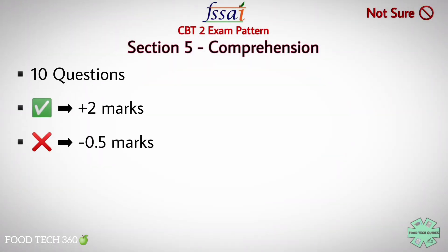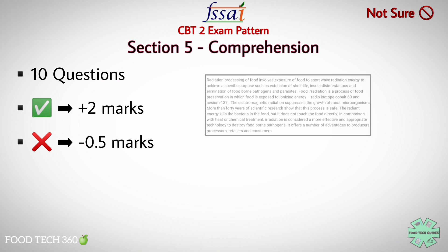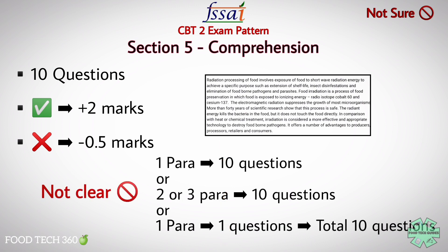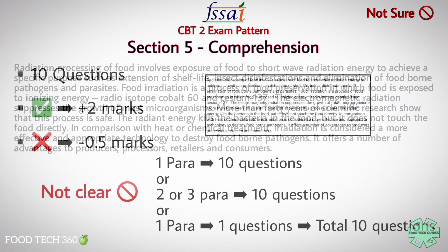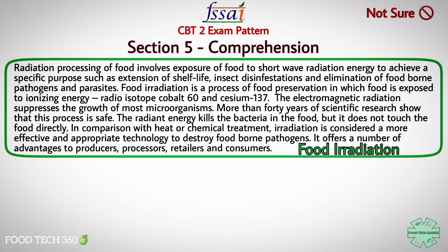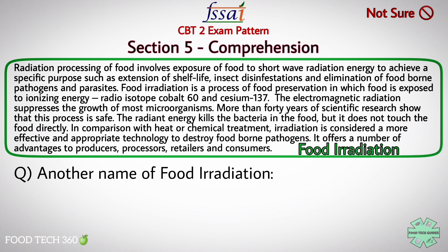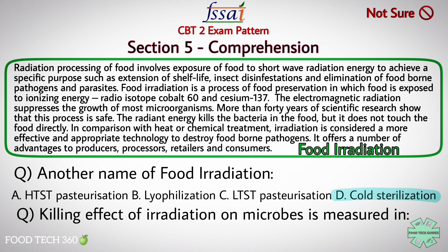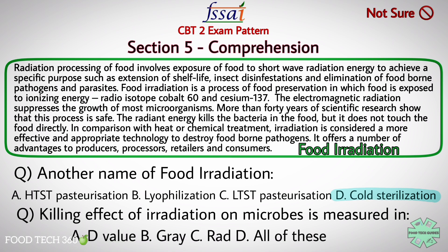Section 5 is Comprehension — 10 questions will be asked, with plus 2 for each correct answer and minus 0.5 for each wrong answer. A paragraph will be provided to read and questions will be asked related to it. The number of paragraphs per 10 questions is not clearly specified. Example paragraph is about food irradiation. Sample question 1: 'Another name of food irradiation?' Options: A) HTST pasteurization, B) Lyophilization, C) LTST pasteurization, D) Cold sterilization. Correct: D — Cold sterilization. Sample question 2: 'Killing effect of irradiation on microbes is measured in?' Options: A) D-value, B) Gray, C) Rad, D) All of these. Correct: A — D-value.